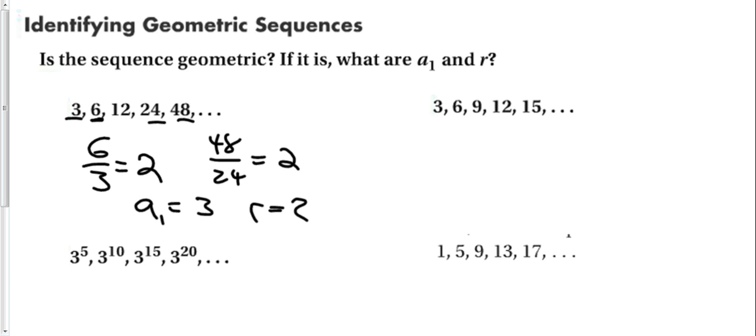So here, this is times 2, 6 over 3 is 2, but is 9 over 6, 2? No, it is not. So this is not a geometric sequence.